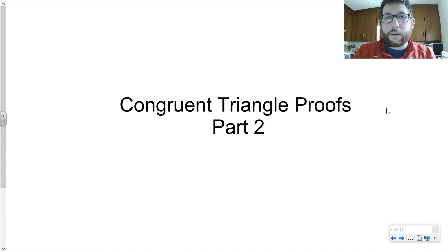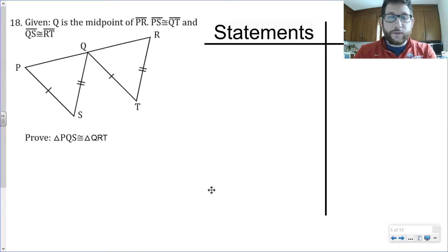So this is our second video on congruent triangle proofs. In the first video, we kept it pretty simple as mostly four-step proofs. Today we're going to look at some five-step proofs. We're going to look at some different reasons we know things are congruent and how we would put them into our congruent triangle proofs.